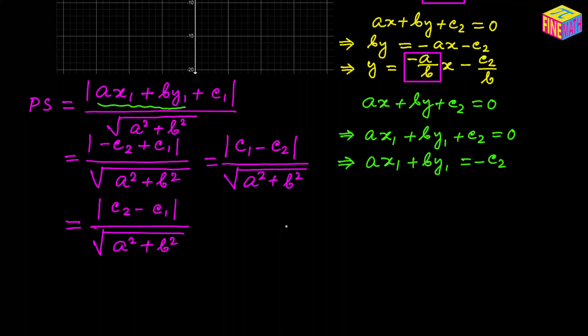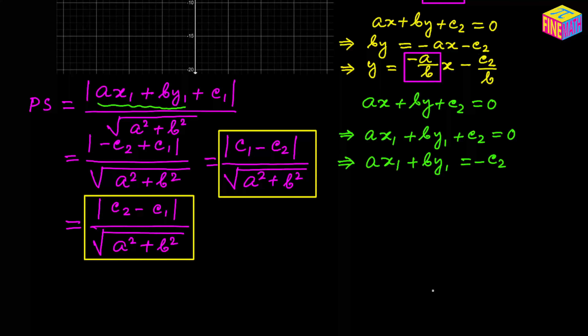Inside the modulus function we can reverse the sign of each term by multiplying by −1 without altering the absolute value. So those are the two equivalent forms of the distance between two parallel lines. Whichever form you use will work just fine because we have the modulus function, so we will always get the same result.